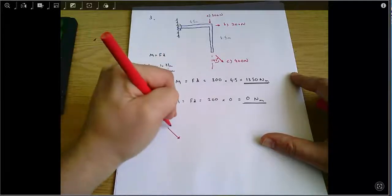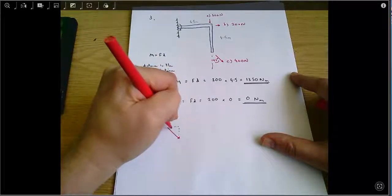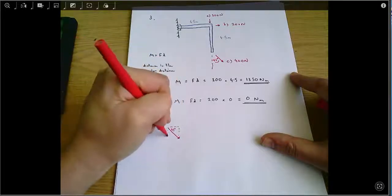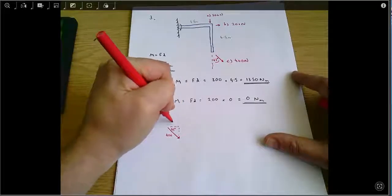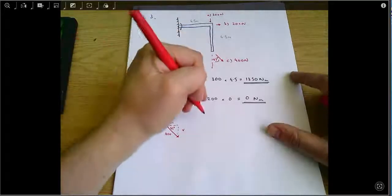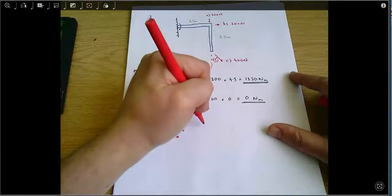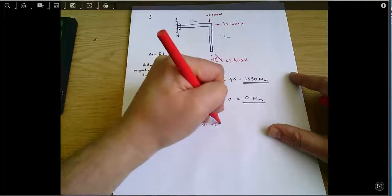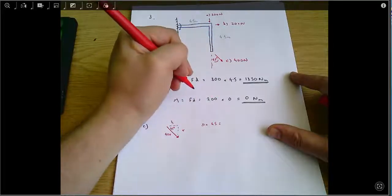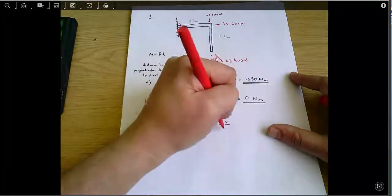So if I just do that, this is 45 degrees, this side here is 400, and this is the horizontal and vertical components, I can say sine 45 equals opposite over hypotenuse, which here is V over 400.